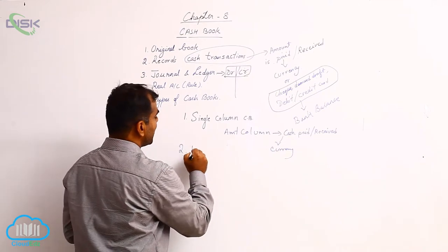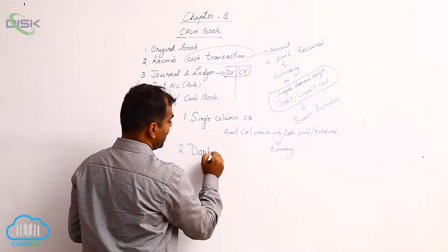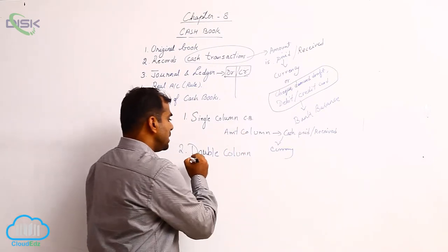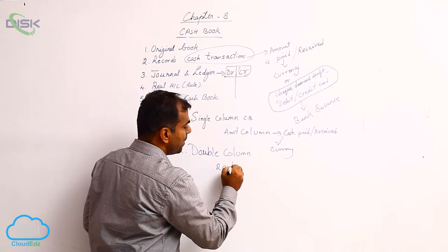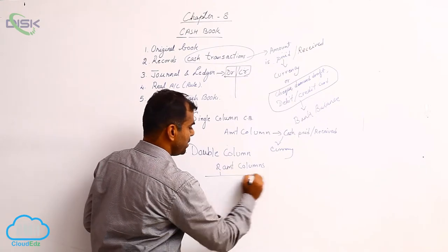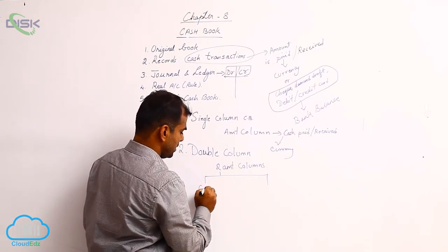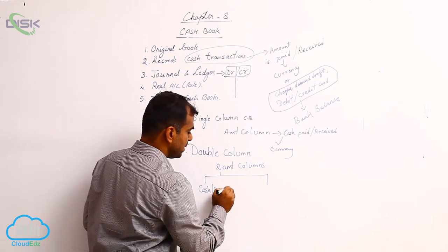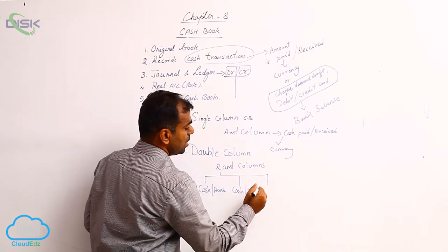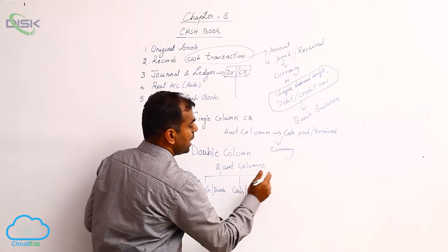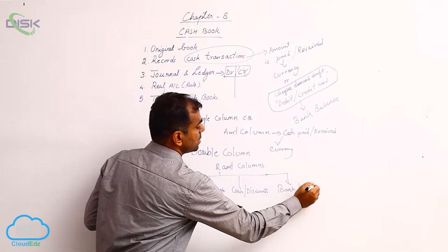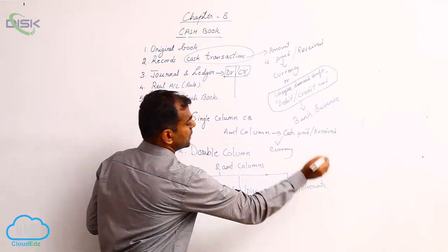Similarly, you have a double column cash book, which has two amount columns. The combination of these two columns could be cash and bank, cash and discount, or bank and discount.